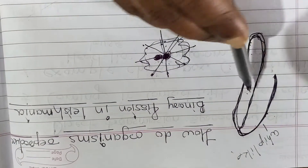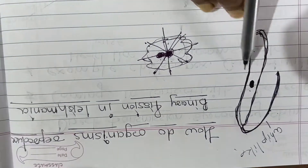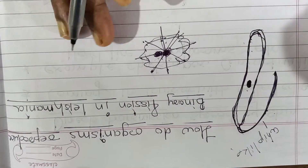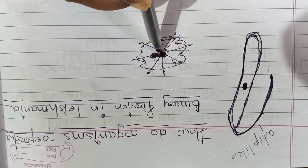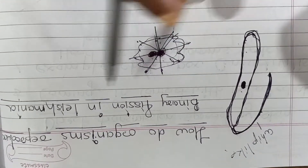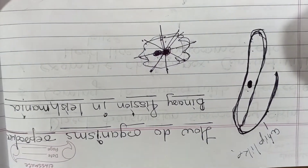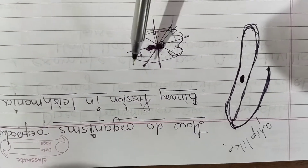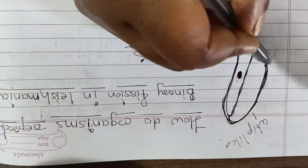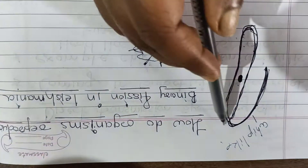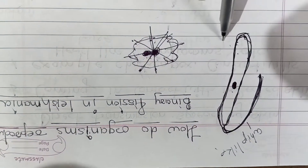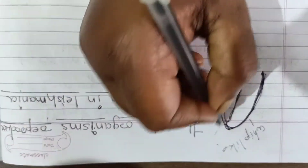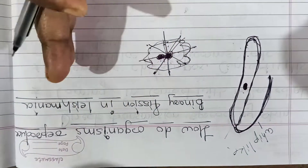In Leishmania, separation takes place in a proper orientation — this is the main difference. While amoeba does not separate in any fixed orientation, Leishmania separates in a proper orientation because it has a whip-like structure. Another Leishmania is formed in this manner only, but at a particular place only it will get divided.